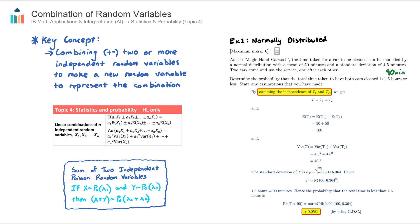I get a variance of the combination of 40.5, and taking the square root gives the standard deviation of the combination. So now I have my two important values: a mean of 100 and a standard deviation of 6.364 for the total time. From there I can use my knowledge of normal distributions — I'll assume you know how to determine probabilities — to actually answer this question, because I've created a new random variable representing the combination of the two independent random variables.